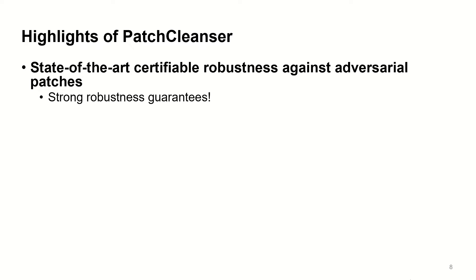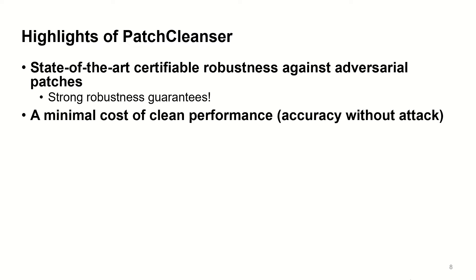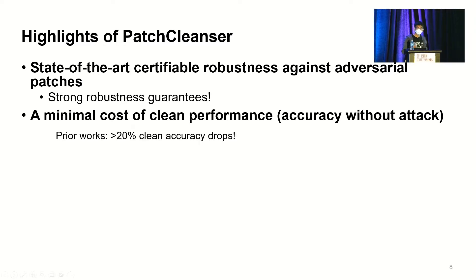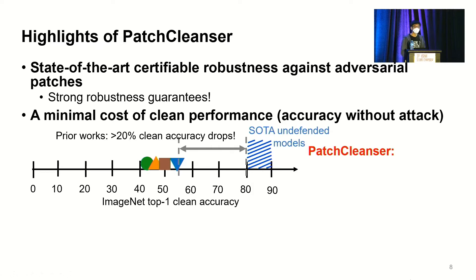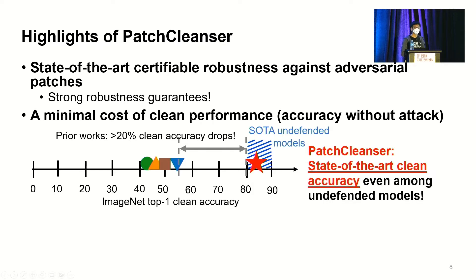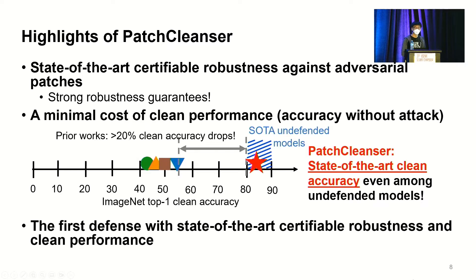In Patch Cleanser, we want to achieve state-of-the-art certifiable robustness against adversarial patches. In addition, our certifiable robustness comes at a minimum cost to clean performance. Unlike prior work that induced around 20% clean accuracy drop on ImageNet, our Patch Cleanser maintains state-of-the-art clean accuracy even among undefended models. This is the first time a defense achieves state-of-the-art certifiable robustness and clean accuracy simultaneously.